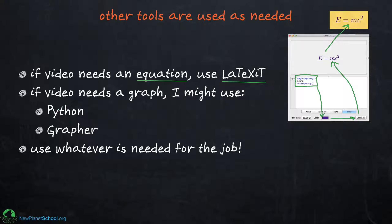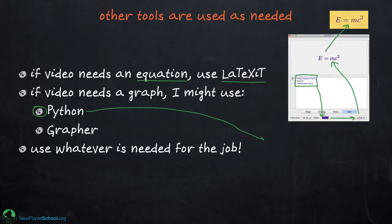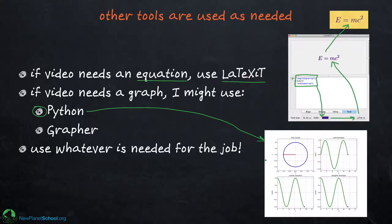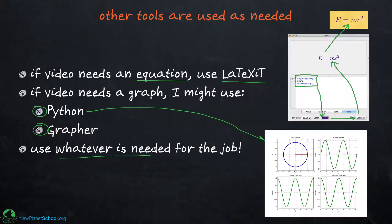If I want to make a graph, the main way I do that is with Python. It's a full-blown programming language but it has very good plotting capabilities. One example is a plot I made for one of my trigonometry videos for the unit circle, which was all coded up in Python using the matplotlib libraries. I'm also starting to use MacGrapher a bit when I need to do something very simple. Basically I use whatever is needed for the job.